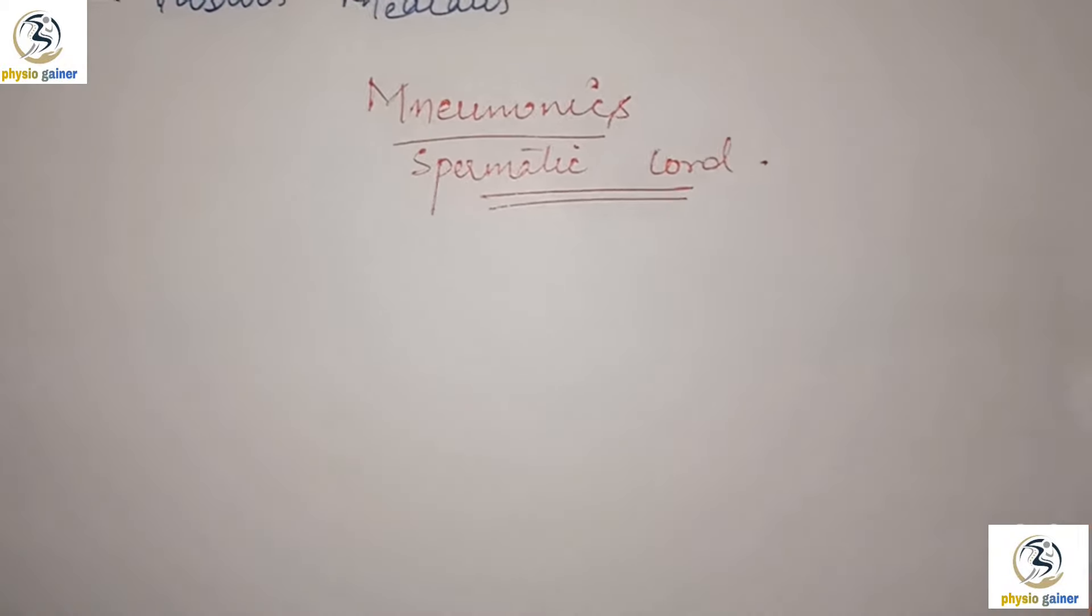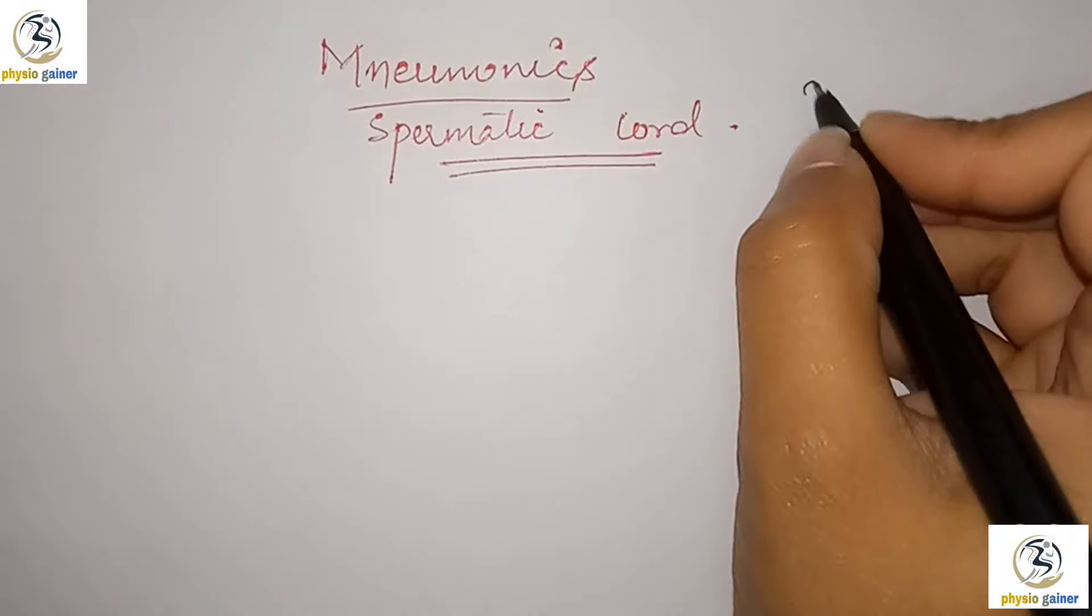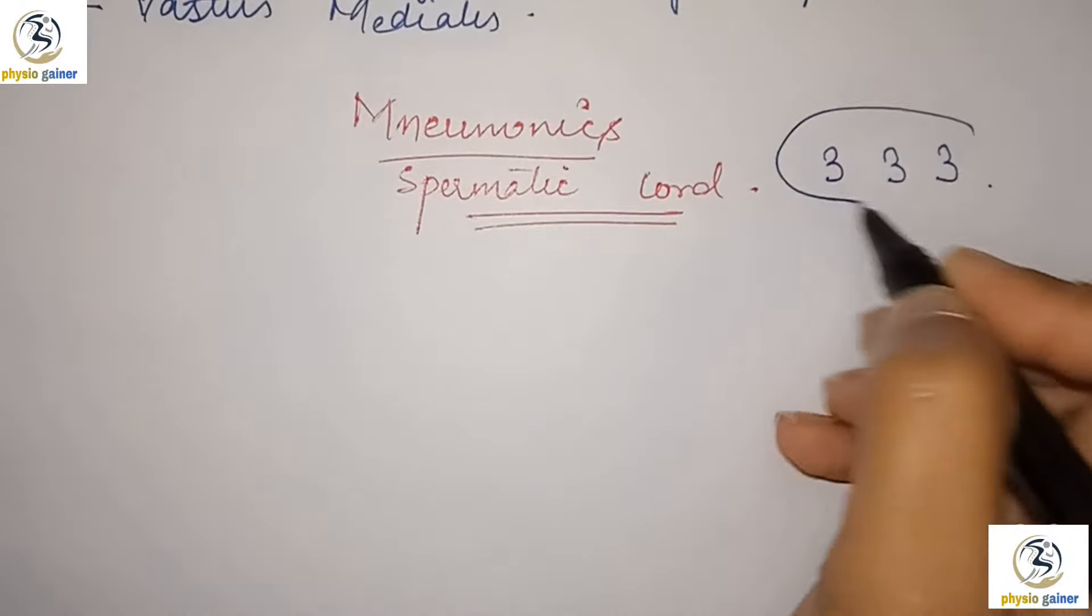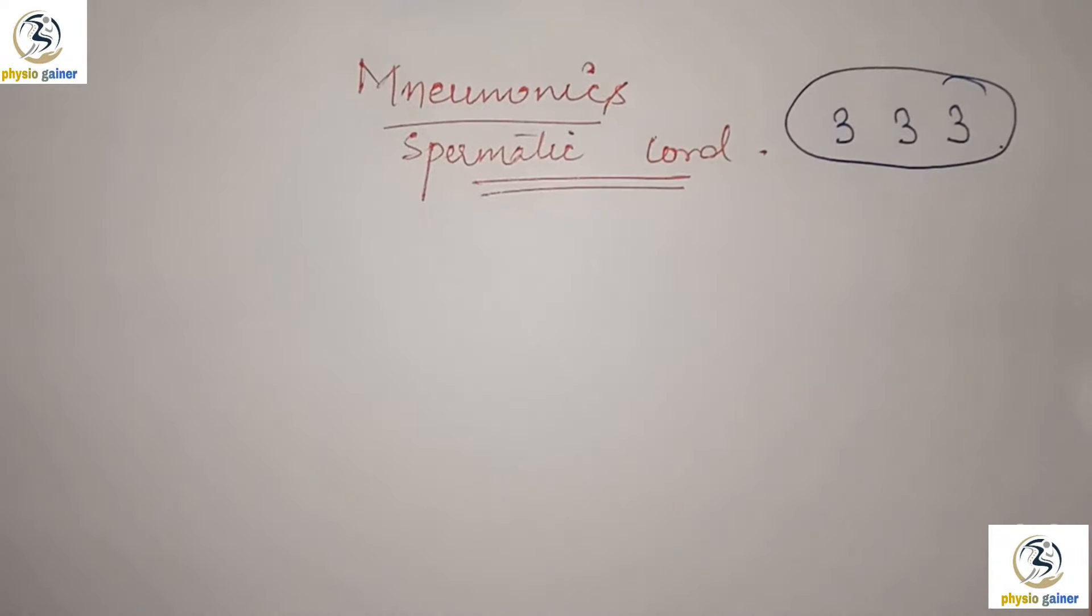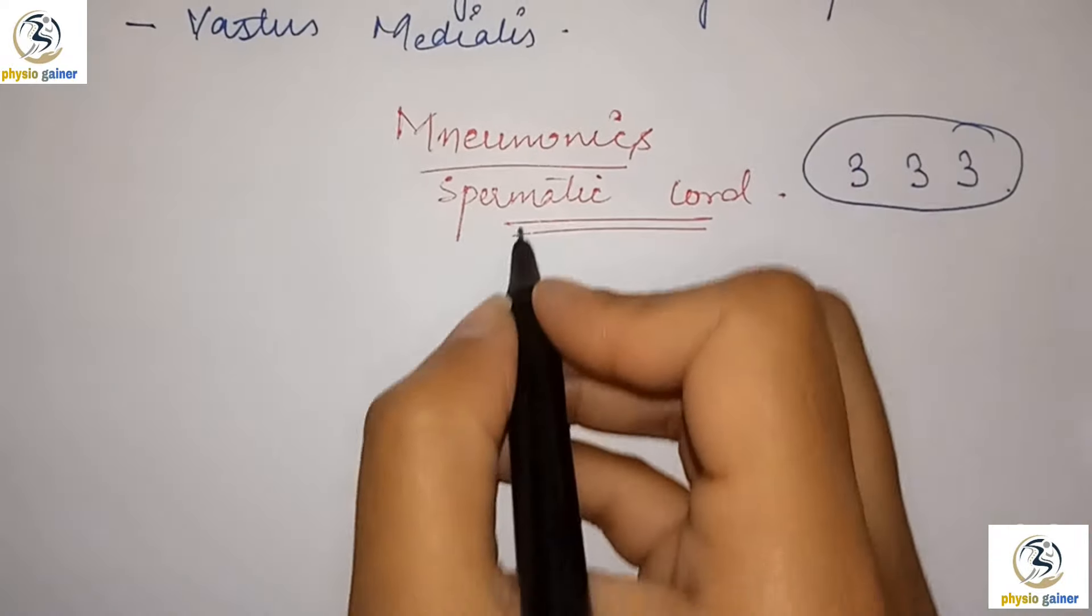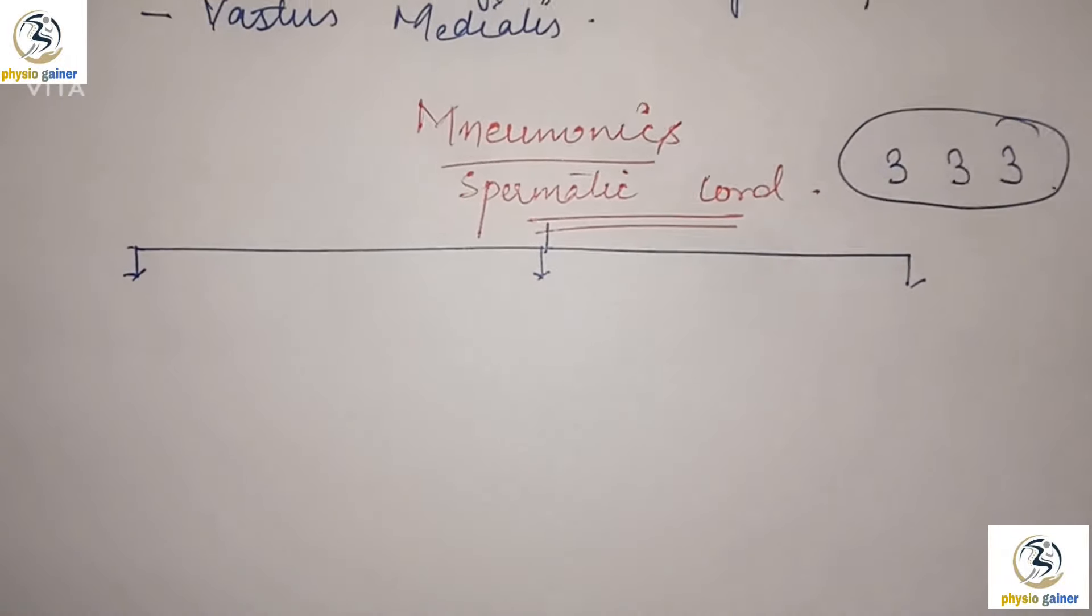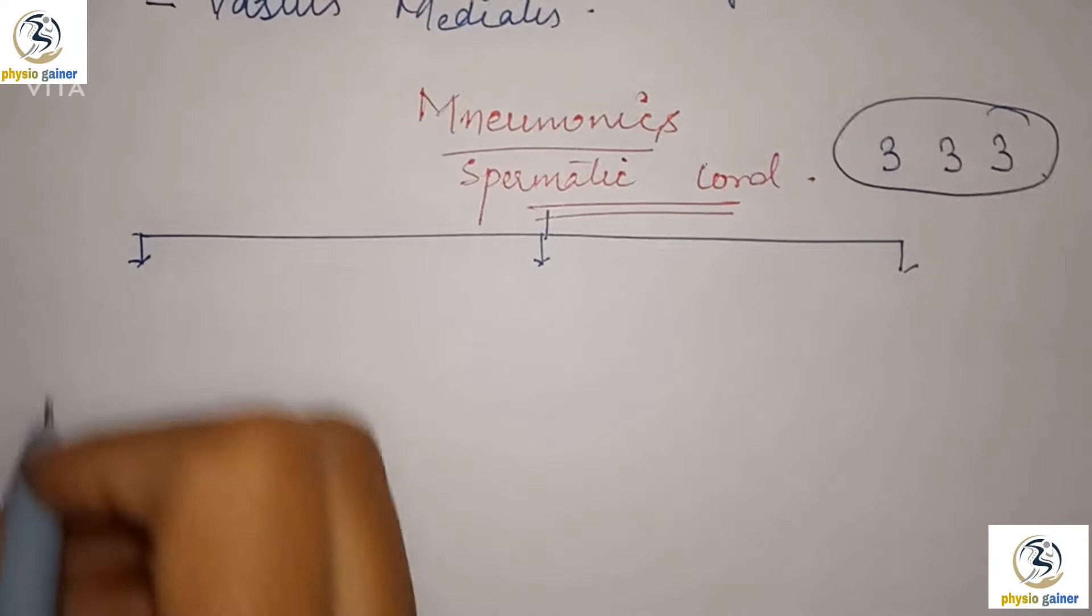The easiest way is that the mnemonic is 3, 3, and 3. That means we will divide the content into 3 parts.